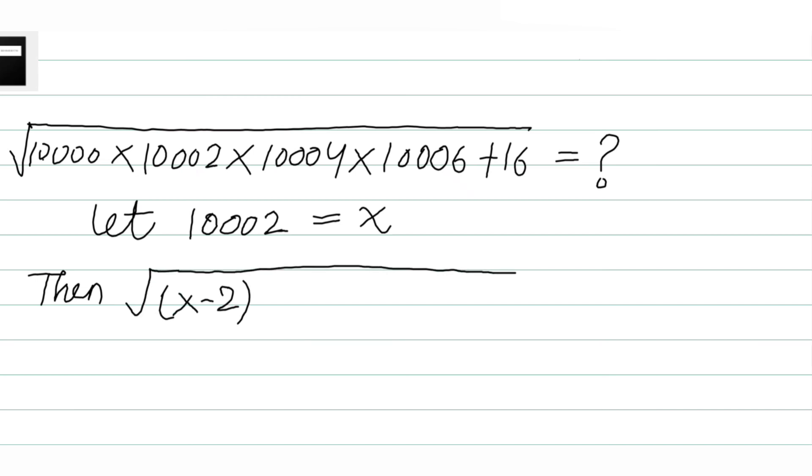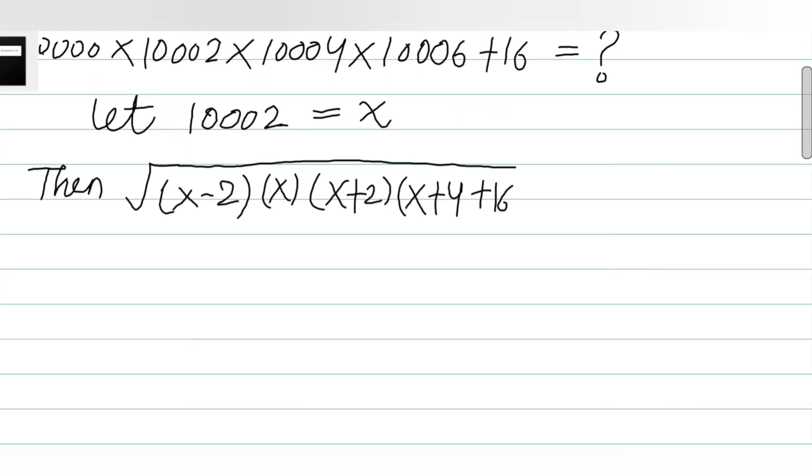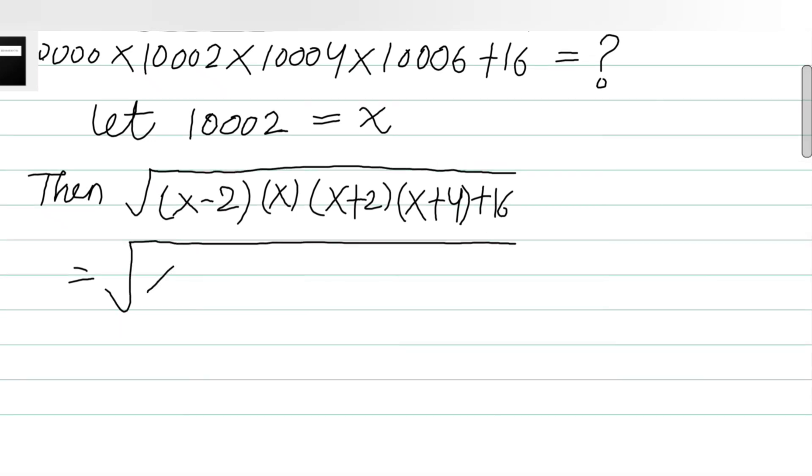√[(x-2) × x × (x+2) × (x+4) + 16]. Now let's rearrange them like this way, so we will multiply x with (x+2), while (x-2) to be multiplied with (x+4), plus 16.